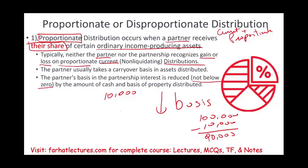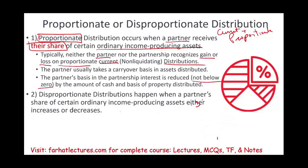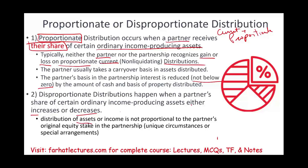If you receive more than your basis, we will discuss what happens. A disproportionate distribution occurs when a partner's share of certain ordinary income-producing assets either increases or decreases relative to their equity stake — meaning you are getting more or less than your proportional entitlement. For example, you own 30% but under a special arrangement you receive a 35% share. However, we will not be working with disproportionate distribution — we are focusing on current and proportionate distribution.